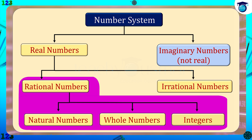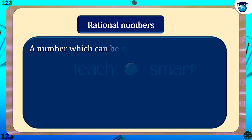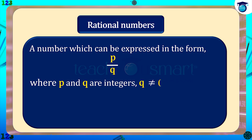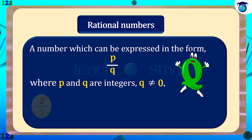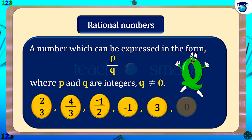We have already discussed rational numbers in the previous class. Let's have a quick recall. A rational number is a number which can be expressed in the form of p/q, where p and q are integers and q is not equal to zero. It is denoted by Q. Examples: 2/3, 4/3, -1/2, -1, 3, 0, etc.